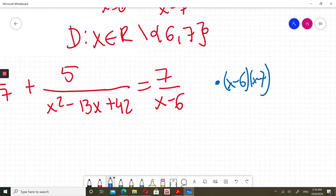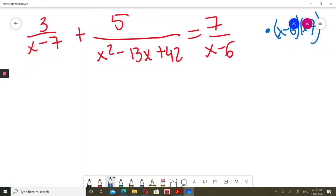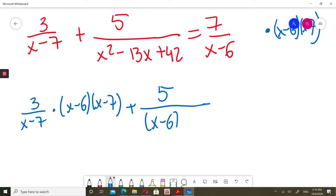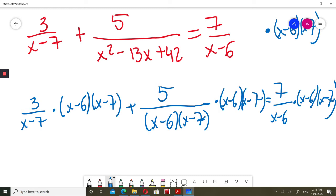So slowly I will do it here. I will put 3 over x minus 7 times x minus 6, x minus 7 very slowly. Plus that 5, I will write 5 over that quadratic, I will write straight away factorized: x minus 6 times x minus 7. From domain I know this. Then this will be multiplied by x minus 6 x minus 7. And that will equal 7 over x minus 6 times x minus 6 x minus 7 as well.